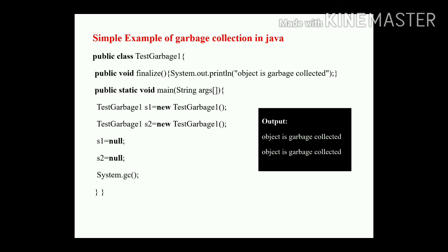TestGarbage1 is the class name; s1 and s2 are the object names; new is the keyword. Then s1 is initialized to null and s2 is also initialized to null. Finally, we call System.gc(). The output is 'object is garbage collected' for the s1 object, and 'object is garbage collected' for the s2 object. I hope you all understand this concept, thank you.